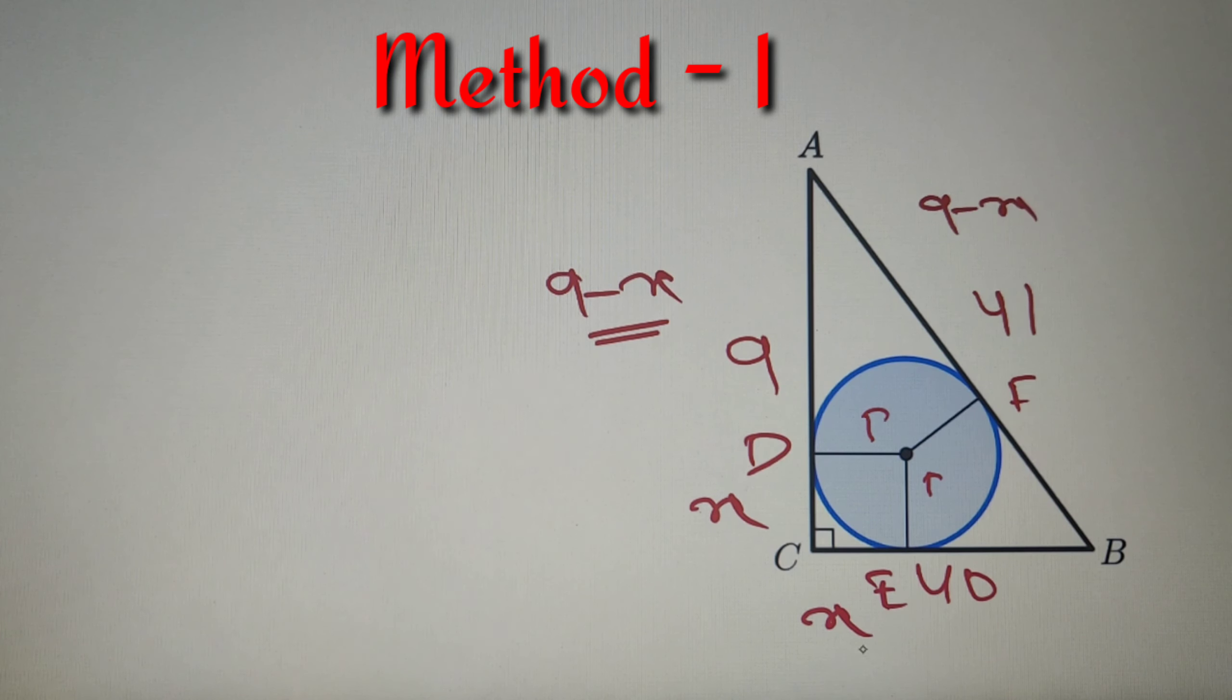Now if CE is equal to X, I can say that the value of BE is equal to 40 minus X, and BF is equal to BE, so I can say that BF is also equal to 40 minus X.